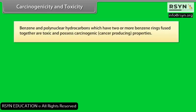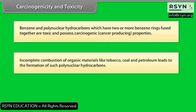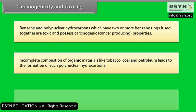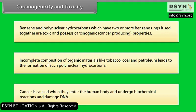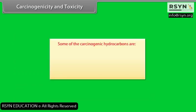Carcinogenicity and toxicity. Benzene and polynuclear hydrocarbons, which have two or more benzene rings fused together, are toxic and possess carcinogenic or cancer-producing properties. Incomplete combustion of organic materials like tobacco, coal, and petroleum leads to the formation of such polynuclear hydrocarbons. Cancer is caused when they enter the human body, undergo biochemical reactions, and damage the DNA.